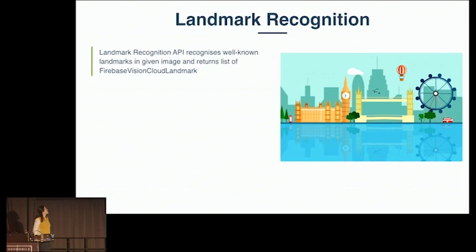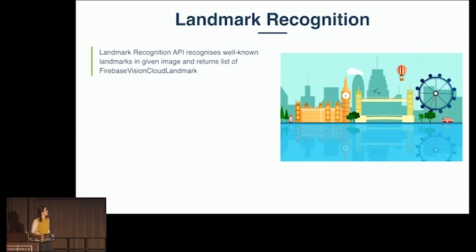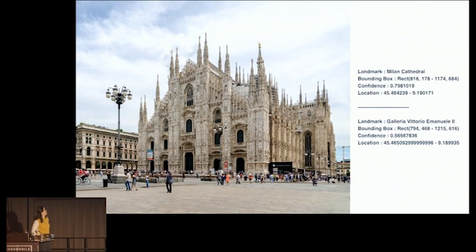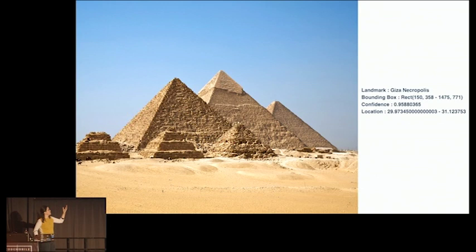The third case is landmark recognition. With the landmark recognition API, you can get well-known landmarks in a given image. It returns a list of results including the bounding box, confidence, entity ID, landmark label, and a list of locations. Since it's not supported on-device, you always need a network connection. For example, it detected Milan Cathedral with 0.7 confidence — lower than expected — and Giza Pyramids with very high confidence of 0.95.